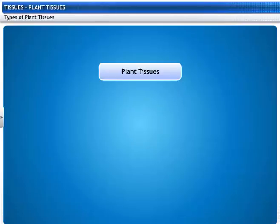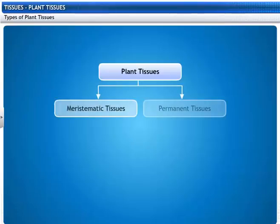These are the different types of plant tissues: meristematic and permanent tissues.